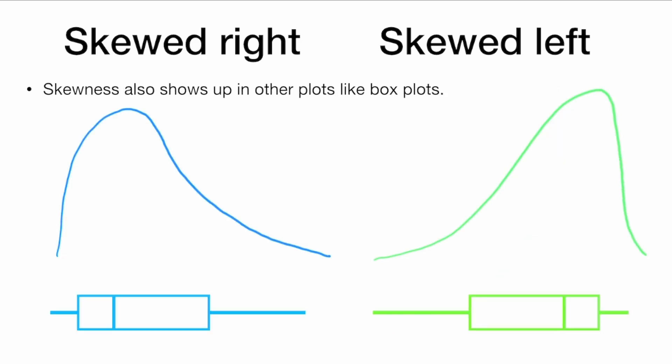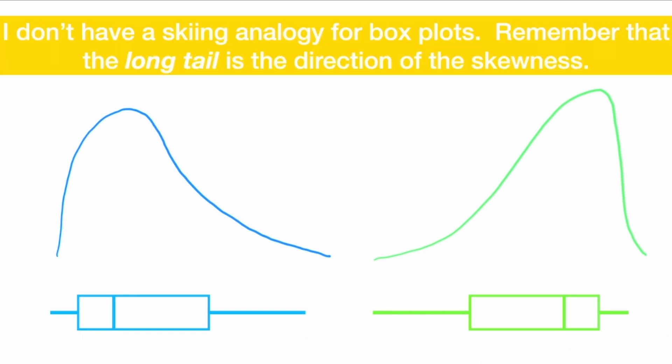So we got skewed right, we got skewed left. We can also see skewness in box plots. When we have the long tail to the right, that is skewed right. When we have the long tail to the left, that is skewed left. I don't have a skiing analogy for the box plots. Just remember that the long tail is in the direction of the skewness.